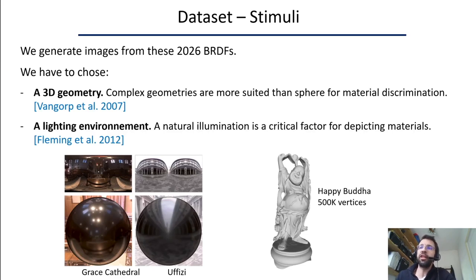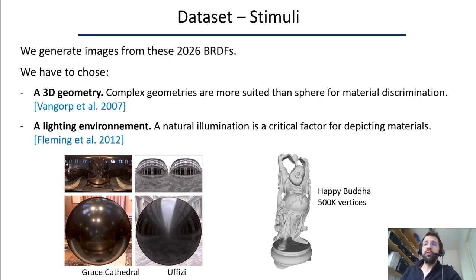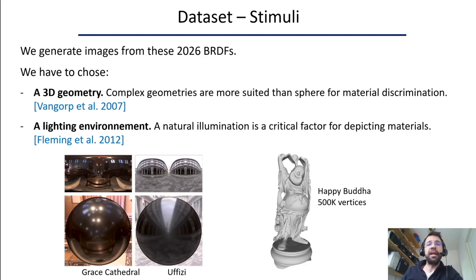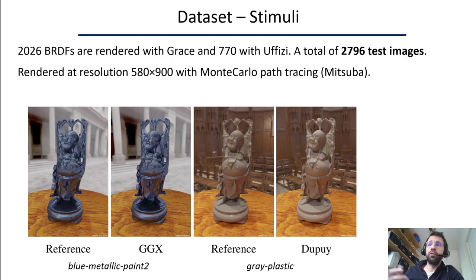Since our objective is to capture how people perceive the similarity and difference between reference and approximated BRDFs, we had to create images, choosing a shape and an illumination. We followed recommendations from the state of the art. Bangor et al. showed that the BRDF model gave good results for material discrimination and has the benefit of being a realistic shape. For illumination, we selected two realistic lighting environments: the Grace Cathedral and the Uffizi. These environments were chosen because they have very different frequency contents. All BRDFs were rendered with the Grace lighting condition, and a part of them also with the Uffizi, yielding nearly 2,800 test images.